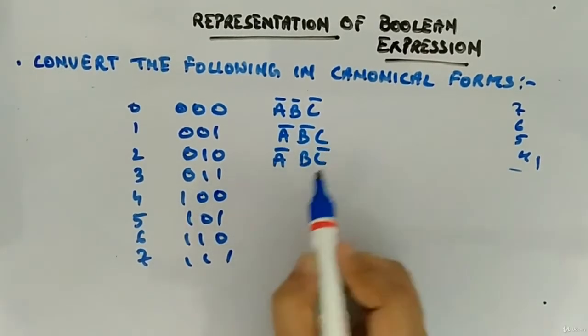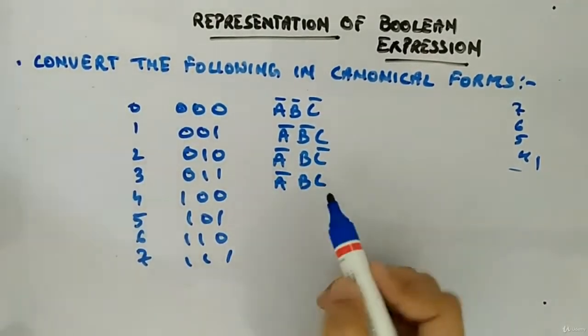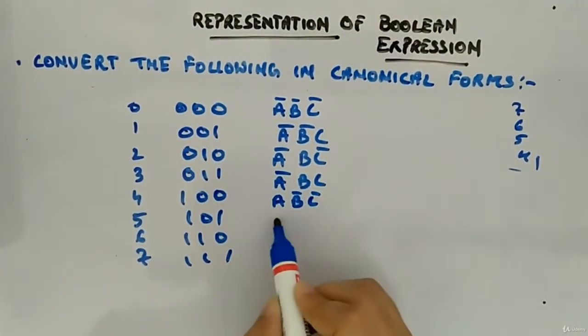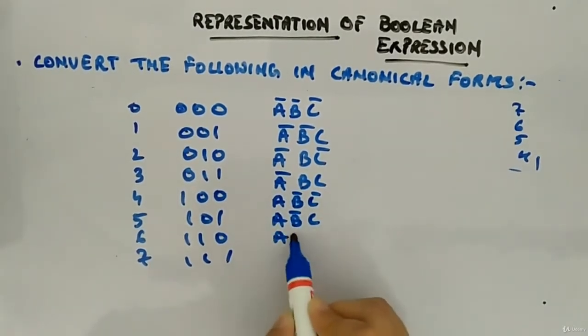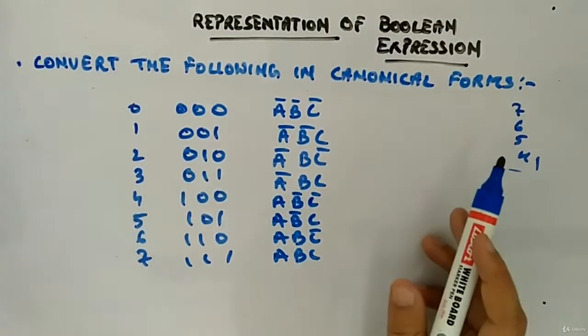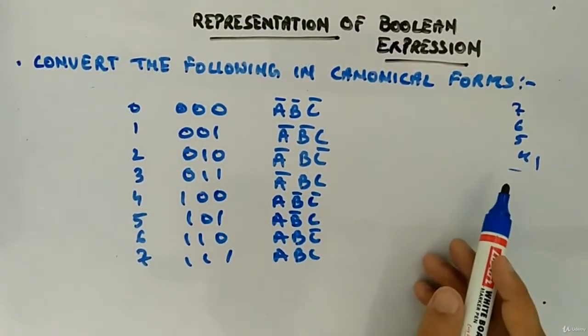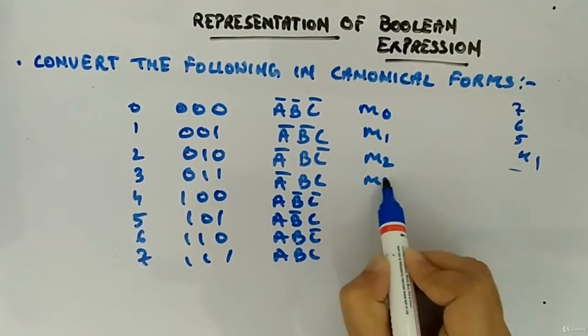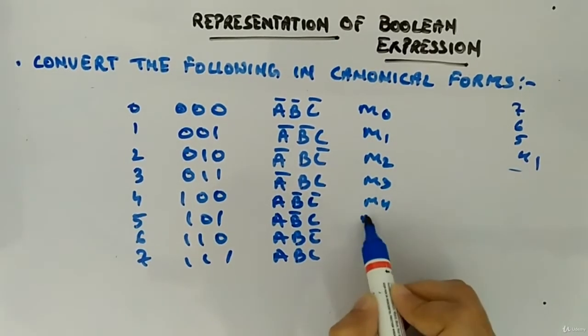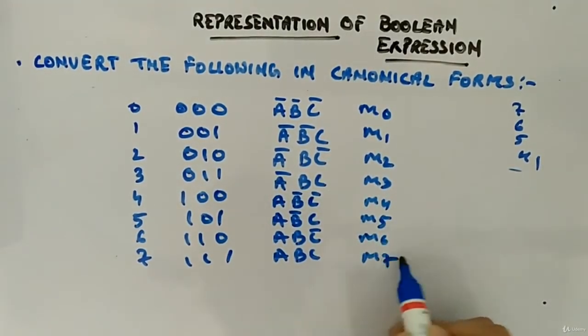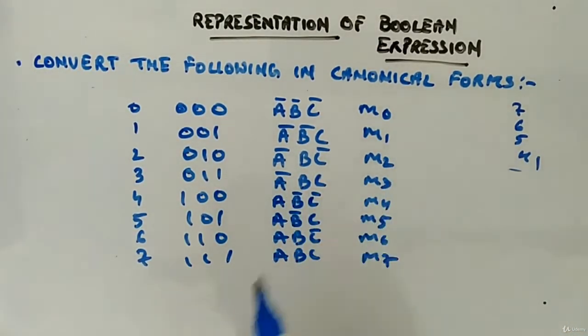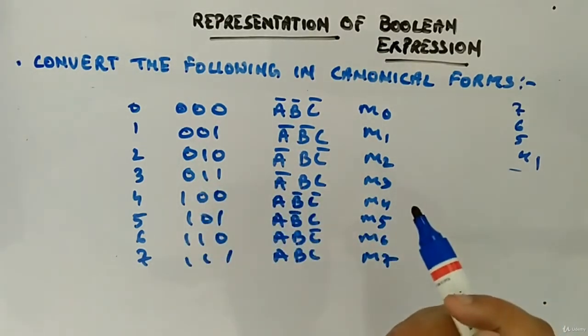Then this one means A, B bar, C bar. This means A, B bar, C. This means A, B, C bar. And this is A, B, C. So we have term 7, 6, 5, 4, 1 and this is M0, M1, M2, M3, M4, M5, M6, M7. So that is how you can see that how each term is signifying which combination.